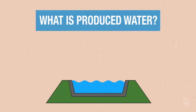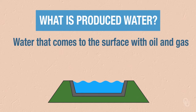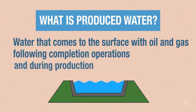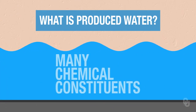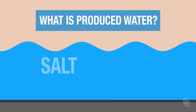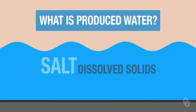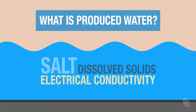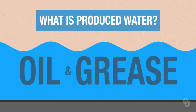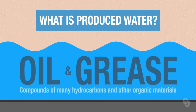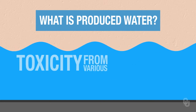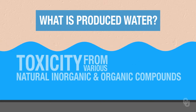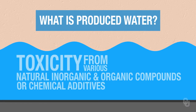Produced water is water that comes to the surface with oil and gas following completion operations and during production. It contains many chemical constituents: high salt contents, high dissolved solids, high electrical conductivity, oil and grease, compounds of many hydrocarbons and other organic materials, and toxicity from various natural inorganic and organic compounds or chemical additives.